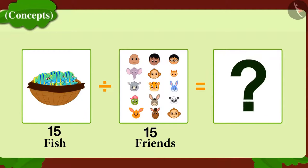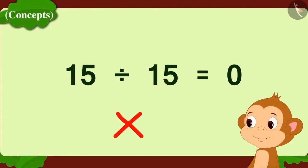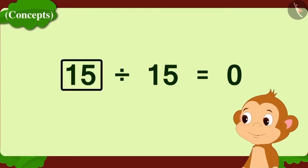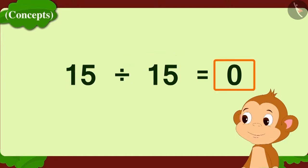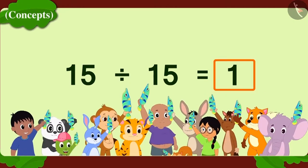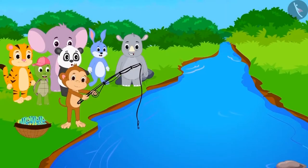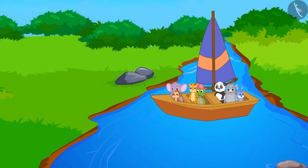Children, has Babban written this correctly? Oh, Babban has written it wrong. Whenever we divide a number by itself, the answer will always be one, as every person will get one object each. All friends caught a lot of fish and happily went home in their boat.